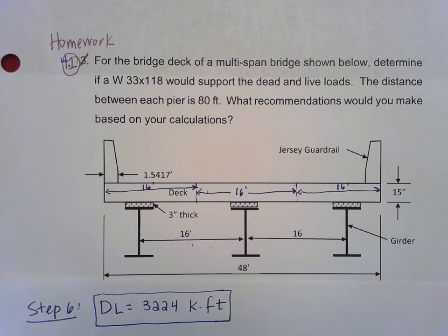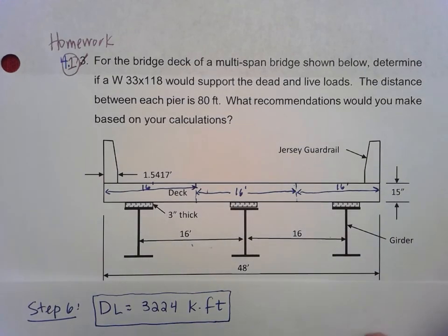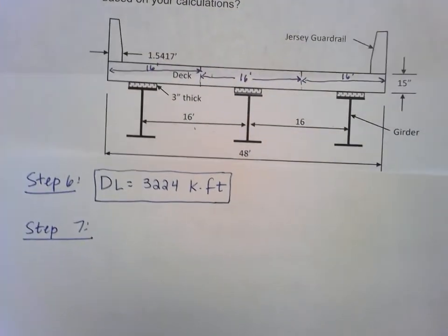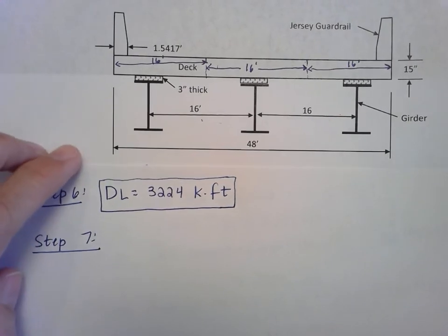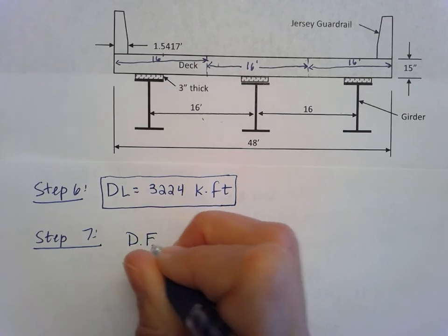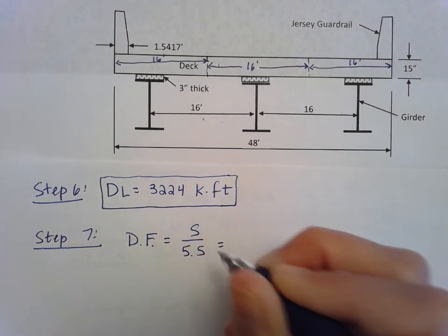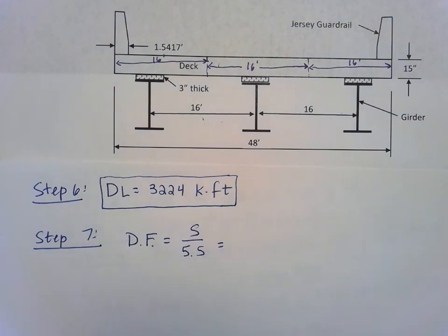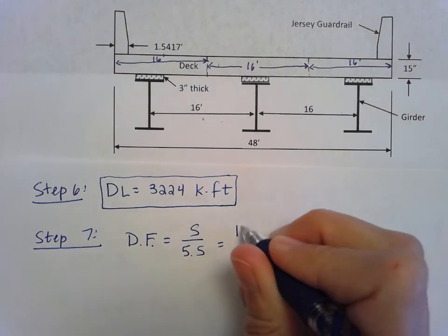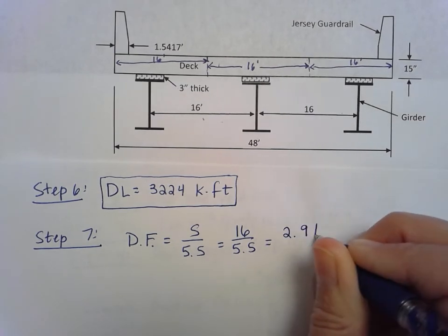Now we're going to move on to step seven. We're going to find the distribution factor for this system. Remember to do this with our moment, we can use a formula. Our formula is that this distribution factor equals the girder spacing divided by 5.5. In this case, the girder spacing is 16 feet, and we divide that by 5.5, which gives us a distribution factor of 2.91.